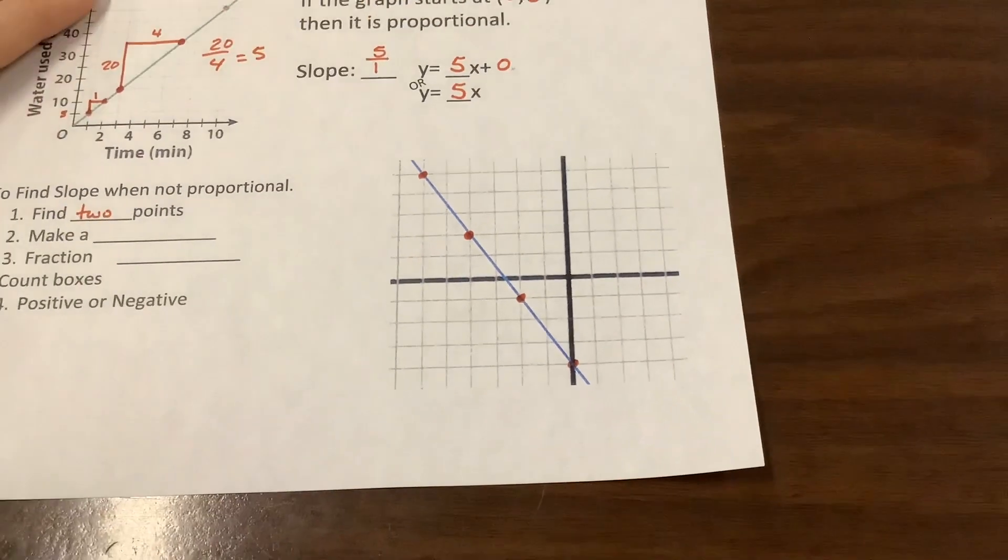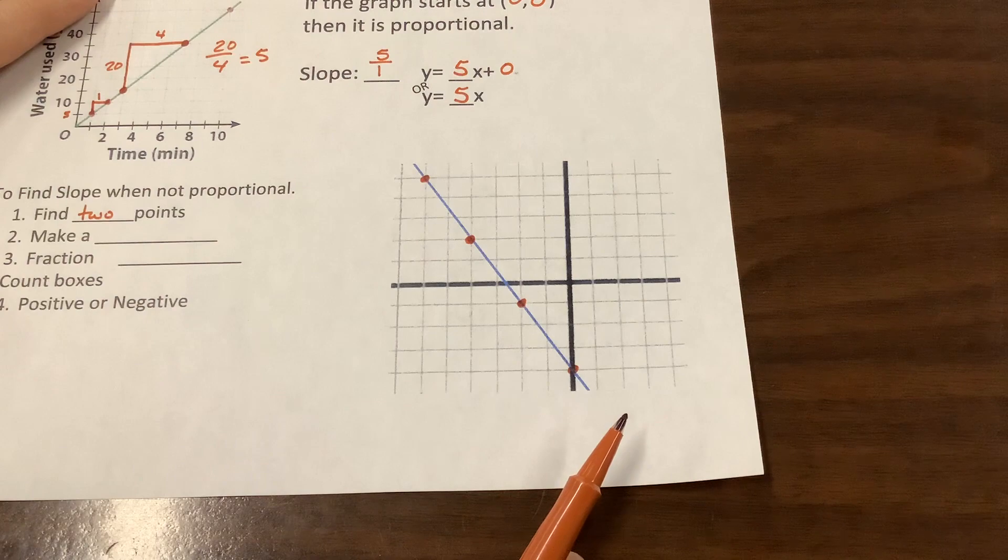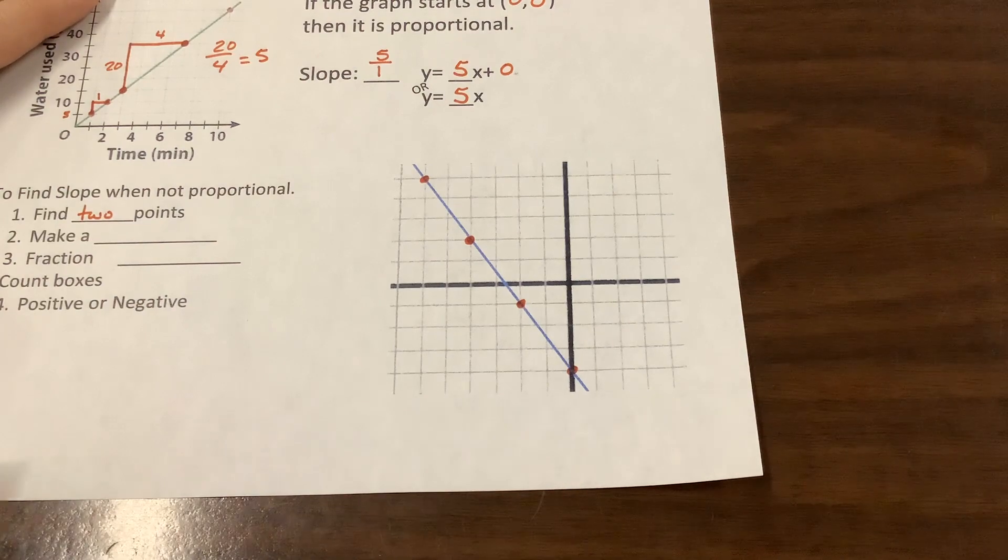Okay. So, now, first of all, looking at this line, is it increasing or decreasing from left to right? Decreasing. It is decreasing, which means it's what type of slope? Negative. It's a negative slope.